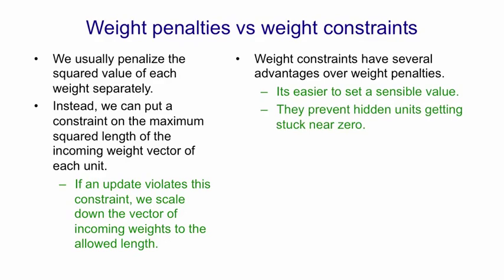Using weight constraints also prevents hidden units getting stuck near zero with all their weights being tiny and not doing anything useful. Because when all their weights are tiny there's no constraint on the weight so there's nothing preventing them from growing. Weight constraints also prevent the weights from exploding.